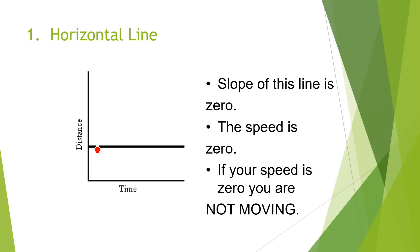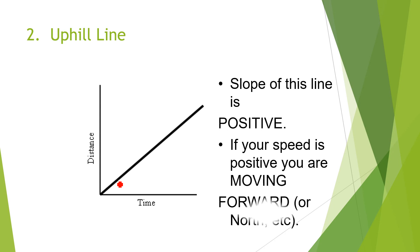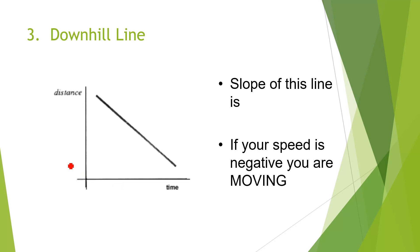If the speed is zero, then the object is not moving. In case two, this is an upward line — with the passage of time the distance also increases. The object is covering some distance in a positive or specific direction. In this case the slope of this line is positive, and if the slope is positive it means the speed is positive and the object is moving in a forward direction.